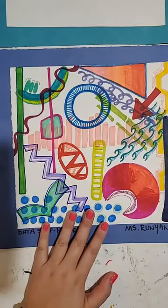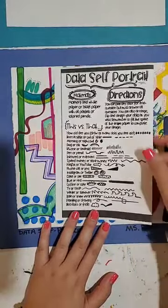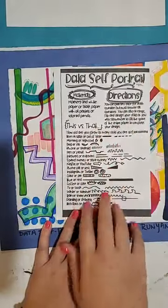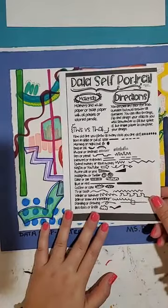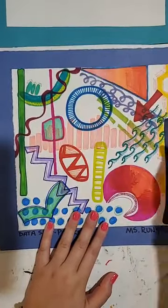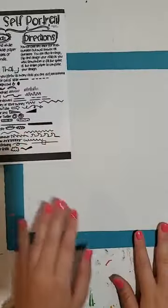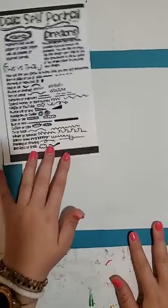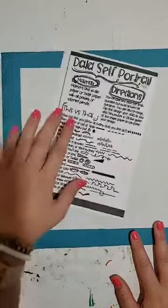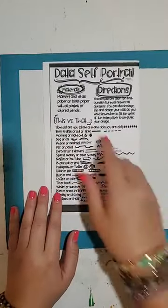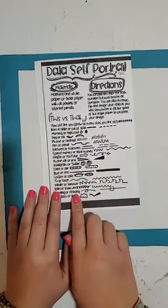We're going to combine all of these things to make our data self-portrait. I'm going to post this 'this or that' sheet in the comments of this video for you to make your own. The main part we really want to focus on — there are only a couple of rules. One: you have to answer every question on the sheet. Two: each question has to be a different color. And three: you have to fill the entire page. We really want to get these cool compositions.